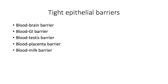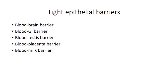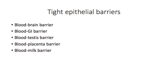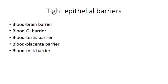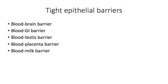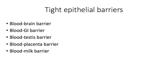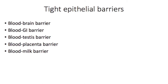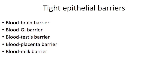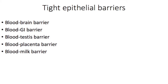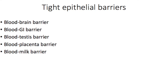However, there are several tissues and fluids in the body that are separated from blood by tight barriers. These include the blood-brain barrier, the blood-GI barrier, the blood-testis barrier, the blood-placenta barrier and the blood-milk barrier. The types of molecules that are able to move from the blood to these tissues tend to be limited to small lipophilic ones.